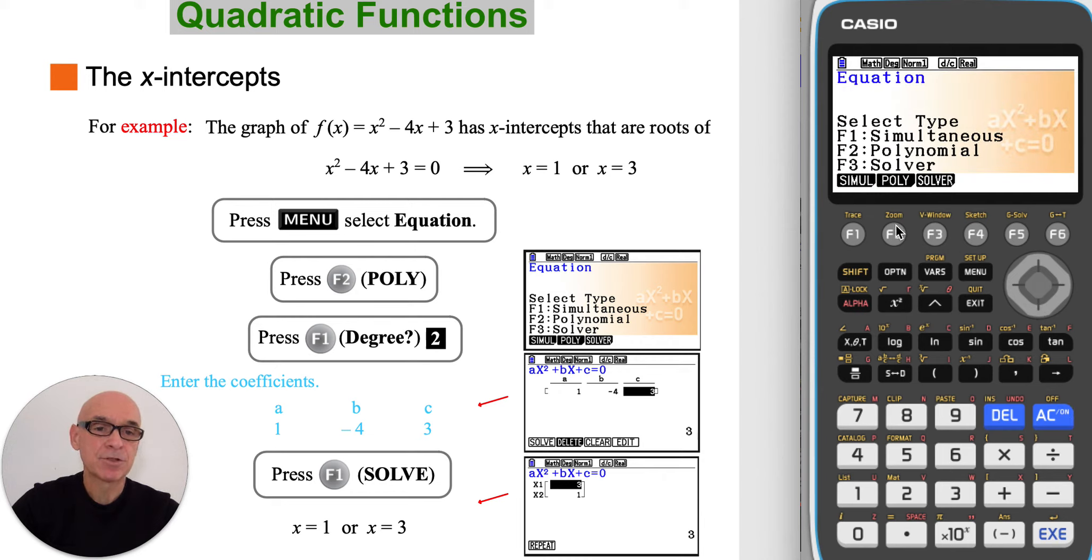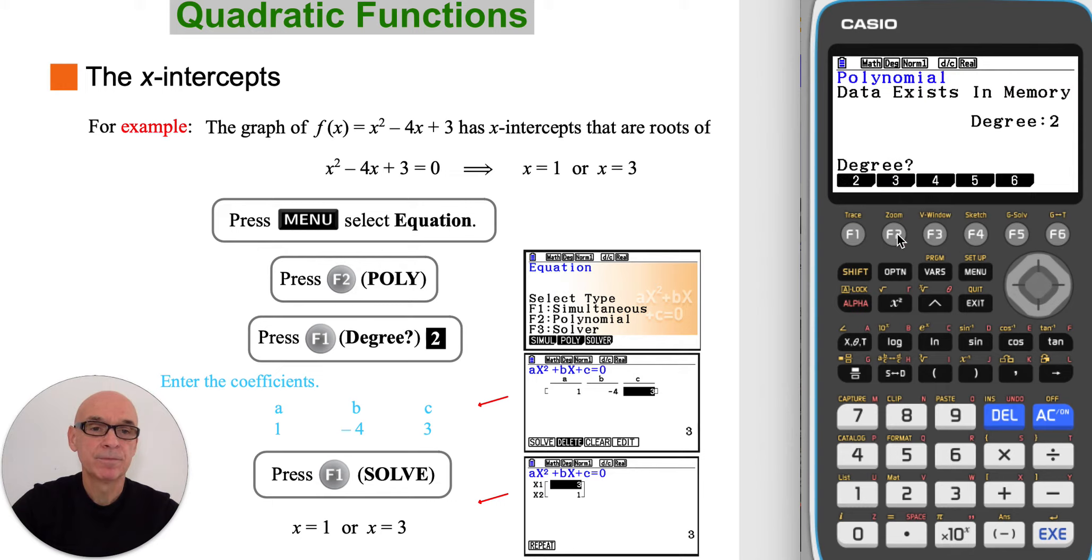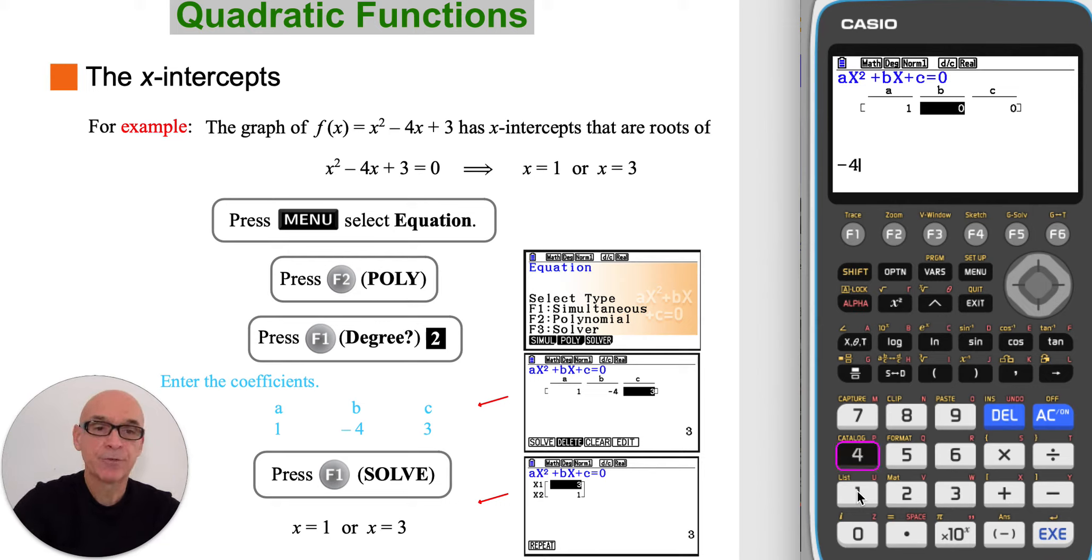Then press f2 for polynomial and f1 for degree 2. Then we can enter the coefficients of the equation. So entering 1 for the coefficient of x squared, negative 4 for the coefficient of x, and 3 for the constant coefficient. And then pressing f1 to solve the equation. We see the roots of the equation are x equals 1 or x equals 3.